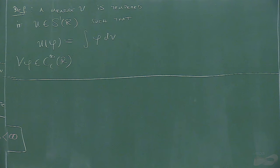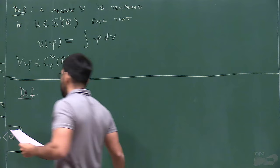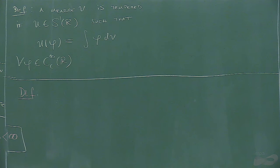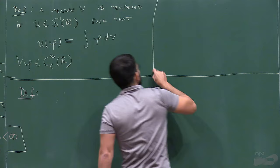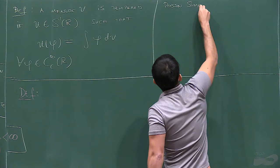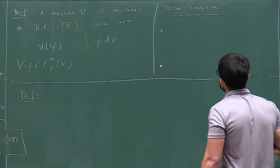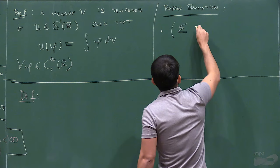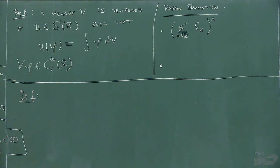Now I can define the thing I wanted in the first place. I want to study what kind of Poisson summations there are. Remember the Poisson summation formula: from the measure-theoretic point of view, you make this sum of deltas at the integers—a pure point locally finite measure—you compute its Fourier transform and you can show it equals itself.